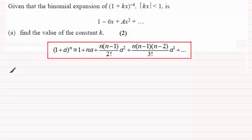So when we've got (1+kx)^(-4), let's just write it in here: (1+kx)^(-4), then how does this compare with what we've got here?